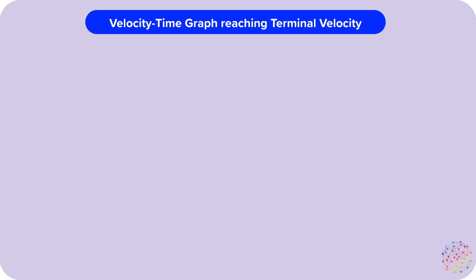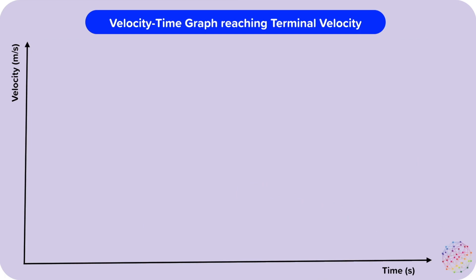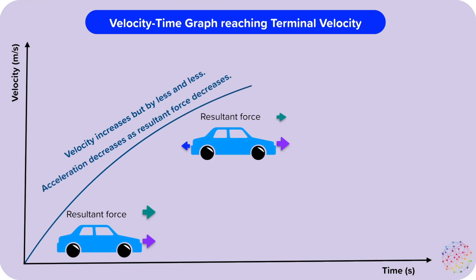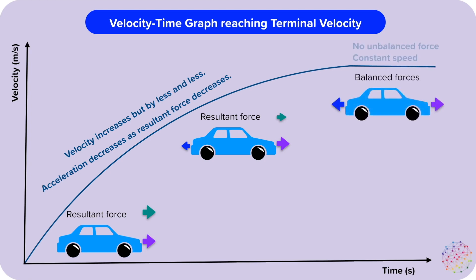Let's think about a velocity-time graph while we reach terminal velocity. We'll want time along the x-axis and velocity along the y-axis. At first, the resultant force accelerates the car — velocity increases. But as it gets faster, the resistive forces increase, so the acceleration decreases as the resultant force decreases. The car's speed is still increasing, but by less and less, so we get a curve. Finally, the forces are balanced — the resistive forces equal the engine force — and we have a constant speed, giving us a flat line. So we start with a diagonal line that becomes a curve, and finally becomes a flat line.